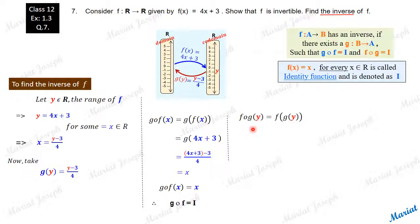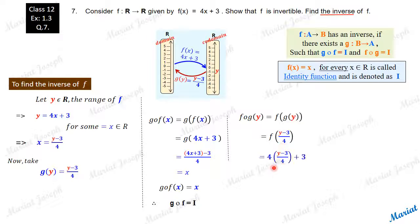Now for fog: fog(y) = f(g(y)) = f((y − 3) / 4). Applying the f rule, f of this element is 4 × (y − 3)/4 + 3 = (y − 3) + 3 = y. So f(g(y)) = y, meaning fog is the identity function.